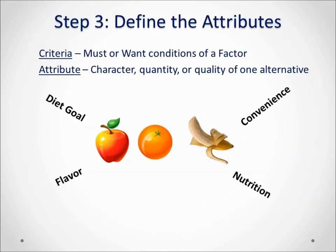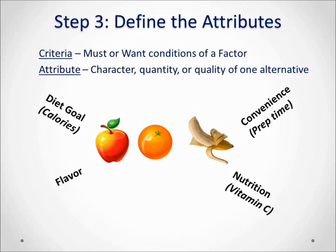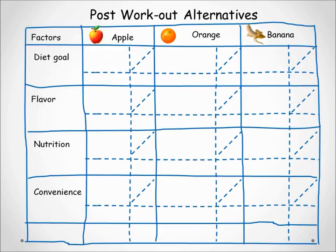A couple of definitions: criteria are the must or want conditions of a factor; an attribute is the character, quantity, or quality of one alternative — the keyword being "one." For the diet goal factor we will use calories; for nutrition, milligrams of vitamin C; and for convenience, minutes to prepare for eating. For flavor it is more subjective, so we will use taste as a differentiator.